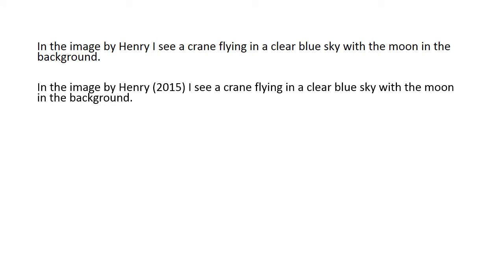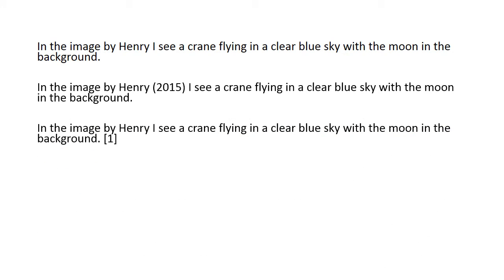This is what that same citation looks like with an APA style format. Just after the name of the author or creator, in parentheses, I have the date of the image. This is an IEEE style citation. After the information that I have used from somebody else, I have the number of appearance of the item that I am citing in brackets.